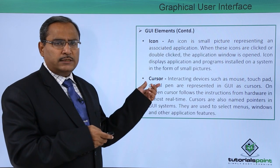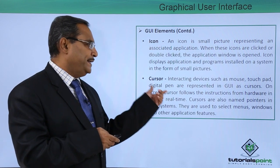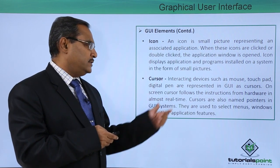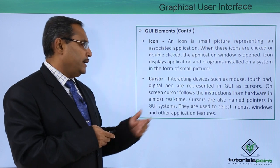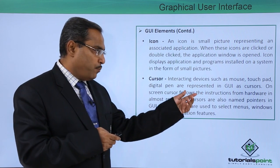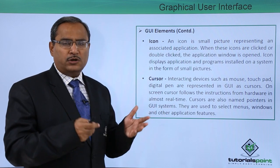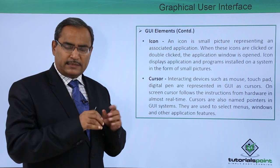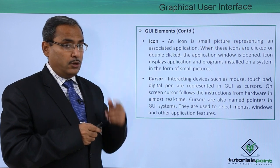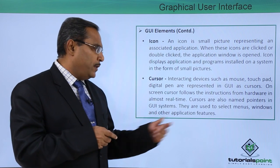Next, we are going to discuss the cursor. Interacting devices such as a mouse, touch pad, and digital pen are represented in GUI in the form of a cursor. The on-screen cursor follows instructions from hardware in almost real time, and cursors are also named pointers in GUI systems. For example, in a text box a cursor blinks, and when you type text the corresponding characters appear immediately. Cursors are used to select menus, windows, and other application features.